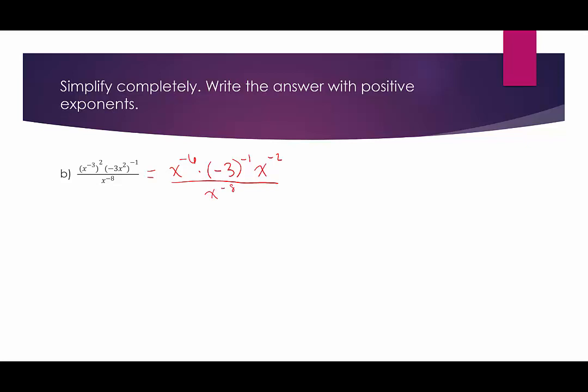It looks like every single factor does not want to be where it is, so every single factor is going to switch its location. The x to the 8th will come up to the numerator, and x to the 6th will be moved down. The negative 3 factor will move down, and x squared will move down. Notice that the exponents all change to positives, but the base itself — that negative 3 base — did not change. It remains negative, because we're just moving the base up or down.